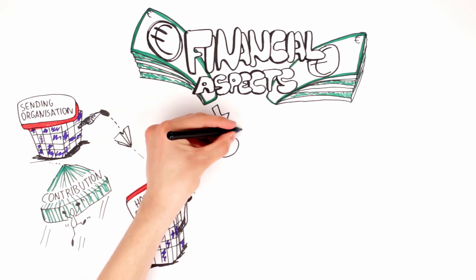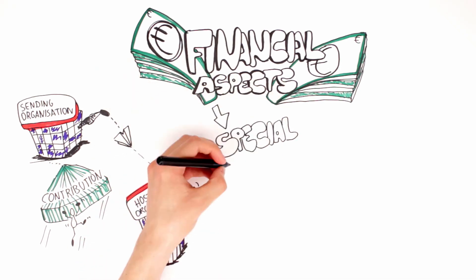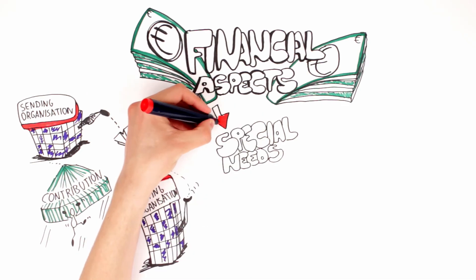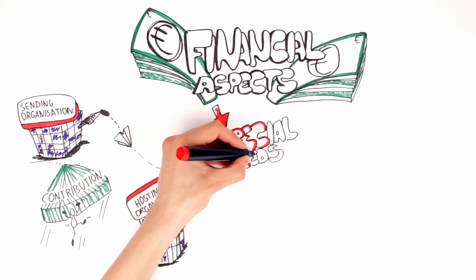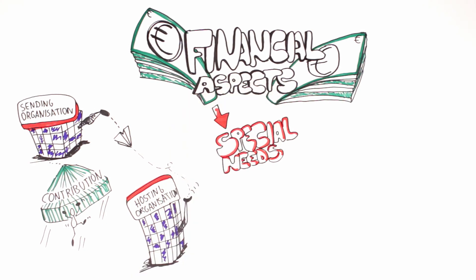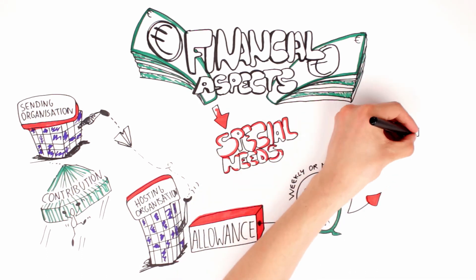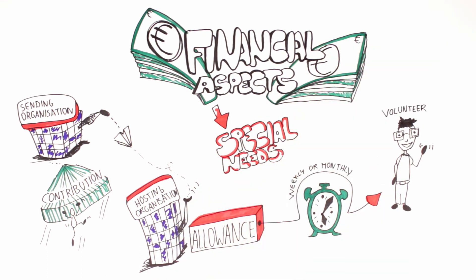Exceptional volunteer costs related to the special needs of the volunteer, for example medical attendance, additional preparation, are paid in full provided they are reasonable and justifiable. The volunteer's allowance is fixed per host country and is paid in full to the host organization and given to the volunteer weekly or monthly.